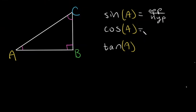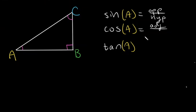Let's look at the cosine of A. We would start from our angle A, and then instead of going opposite as in sine, we would just go next to it — we look at this line right here. We call this the adjacent line. So cosine is adjacent over hypotenuse.